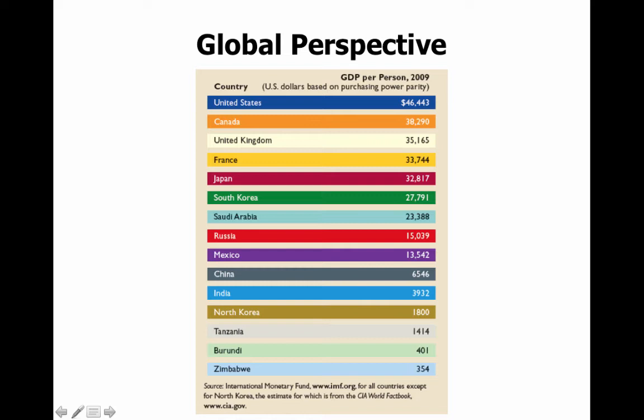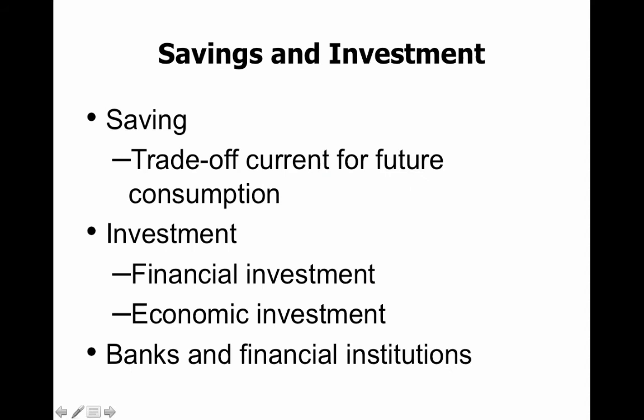From a global perspective, here you've got GDP per capita in 2009. The United States has a pretty high GDP per capita — not the highest, as some other countries are a little bit higher. But when you look at less developed countries, their GDP per capita is much, much lower.